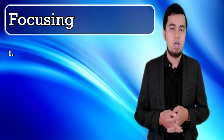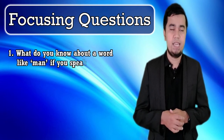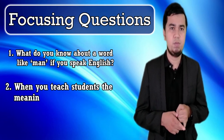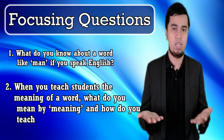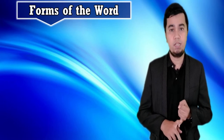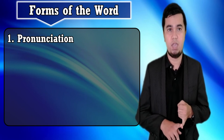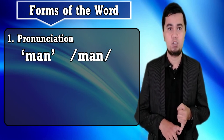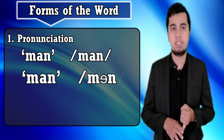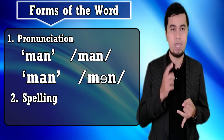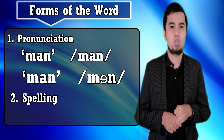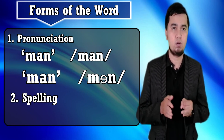On the knowledge of words: what do you think about the word 'man' if you speak English, and when you teach students the meaning of the word, what do you mean by meaning and how do you teach it? We have forms of the word. First, pronunciation — we know that 'man' is pronounced as /mæn/, and words are associated in our memory by sound. Second, spelling — we know the word is spelled as 'man'; words have specific spellings linked to specific rules, such as the language of 'chairman.'